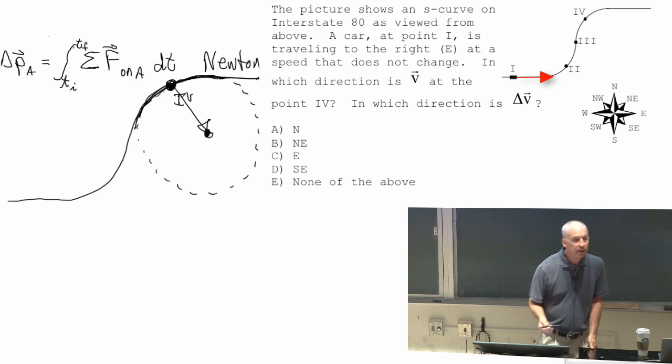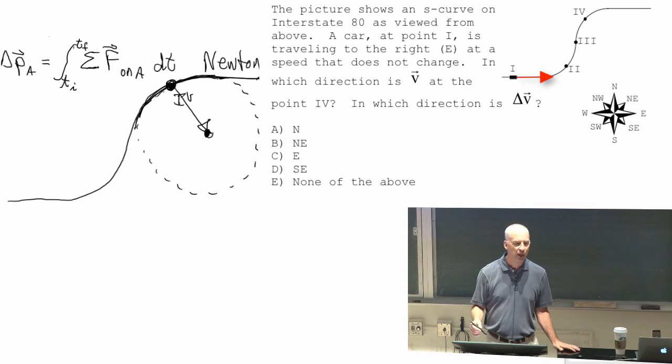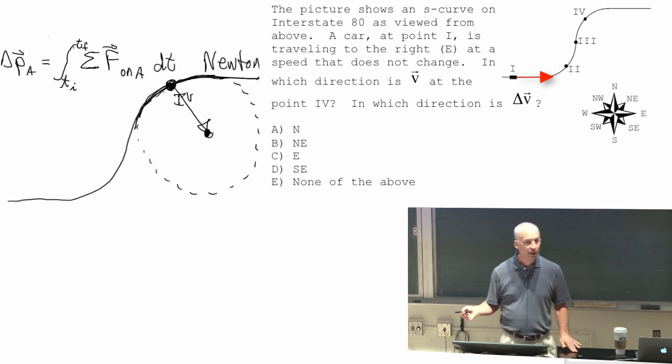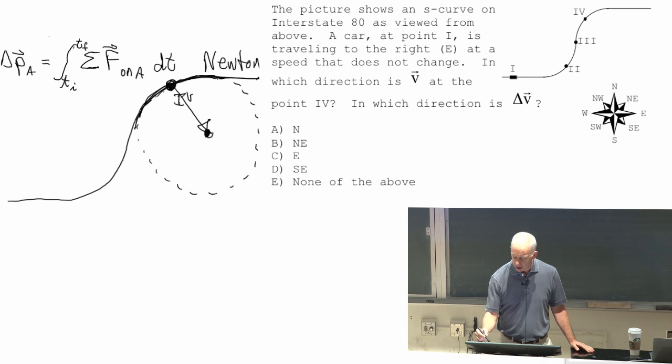If you're at point one, the velocity vector isn't changing at point one. Because just before point one, it's the same as just after—it's east both times. And so it's not changing at all along this straight path. When it curves, it's changing.